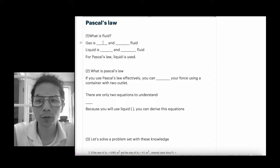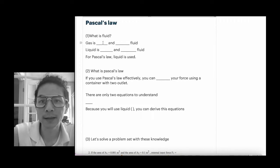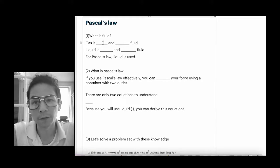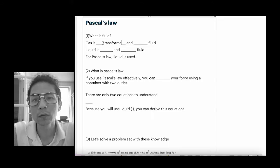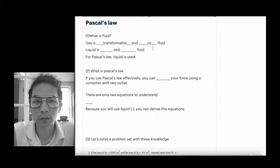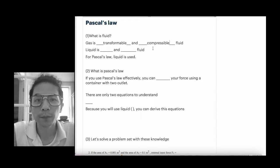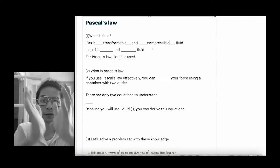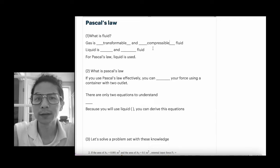The two important keywords here are transformability and incompressibility. For gas, you can define gas as a transformable and compressible fluid. You can imagine a balloon — you can put gas in it and it's transformable because you can squeeze it, and also compressible relatively easily.